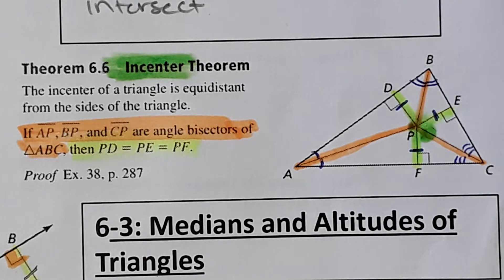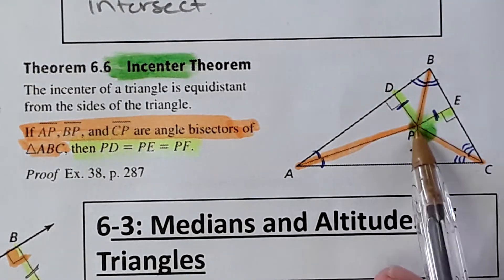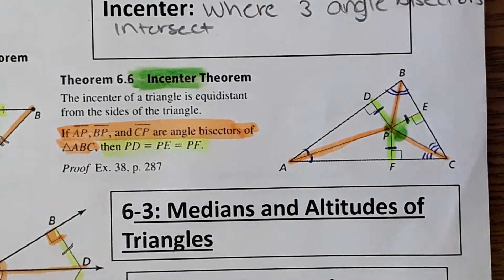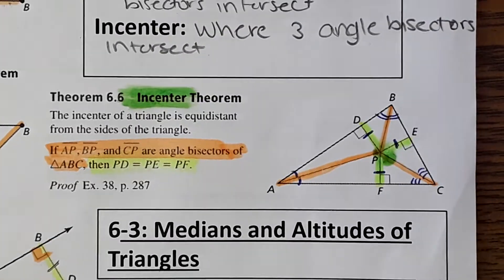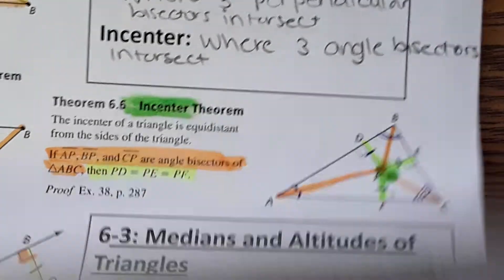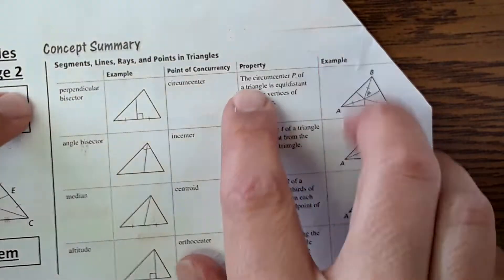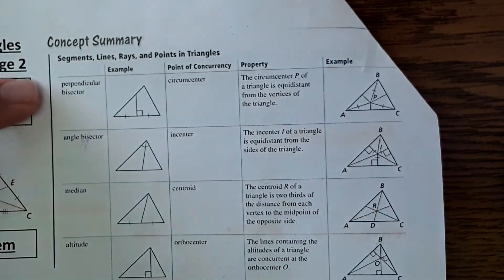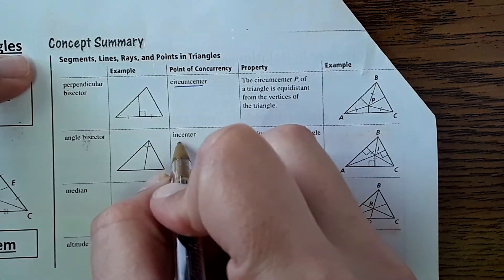So the incenter is equidistant to all the sides, and the circumcenter is equidistant to all the vertices. I know that's a lot to take in — we're going to practice it on the next page. Also, there's a concept summary that has more than we've learned so far, but we just covered circumcenter and incenter.